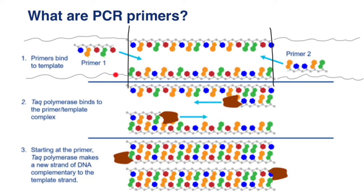In this case, one strand of the DNA would be the template strand, and the other would be the coding strand. You might say that in a PCR reaction, every strand of the DNA would be a template strand. So nevertheless, one strand would be called the template strand of the DNA and the other would be the coding strand of the DNA.